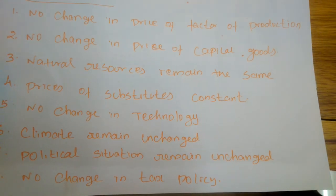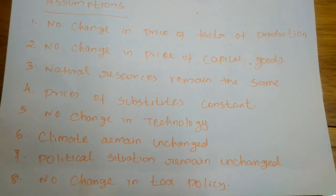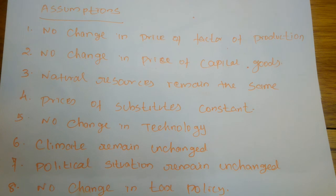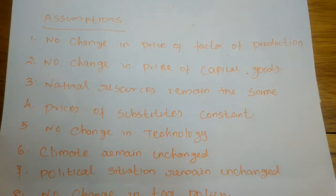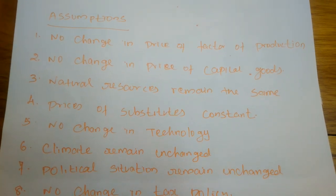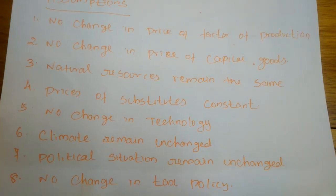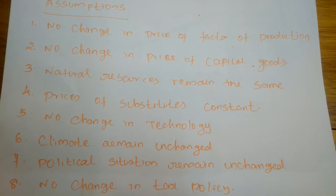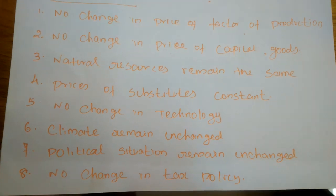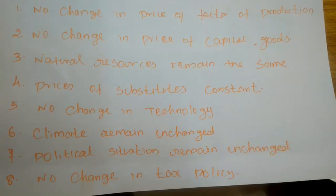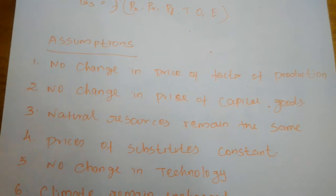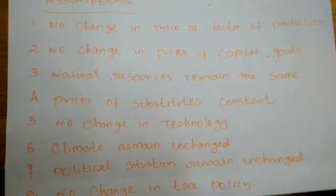Seventh, political situations remain unchanged. Political situations can affect the supply of commodities — a ruling party may decrease the price of a commodity, but a new party may increase it or impose different taxes. Eighth, there is no change in tax policies, as tax policies also affect the supply of a commodity. These eight assumptions must be adopted when explaining the law of supply.